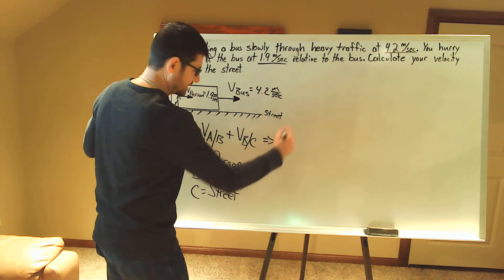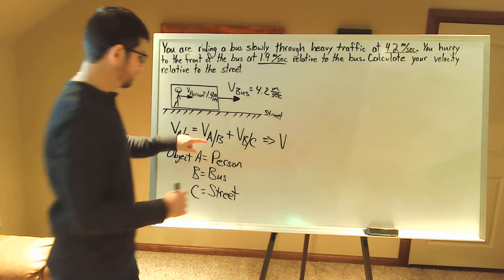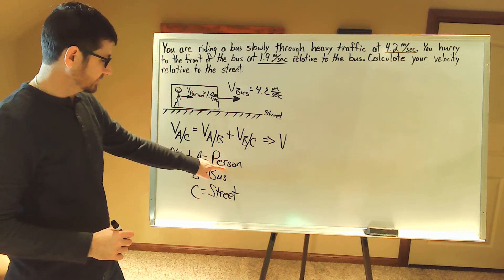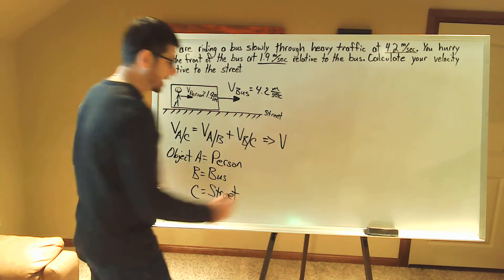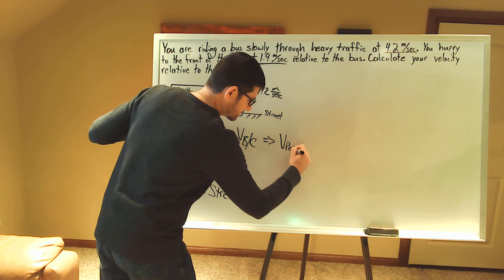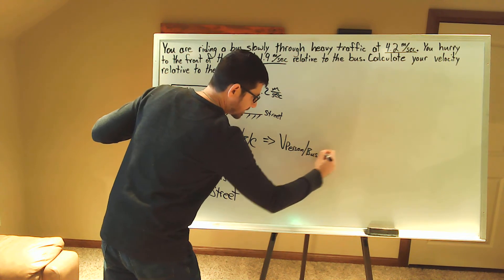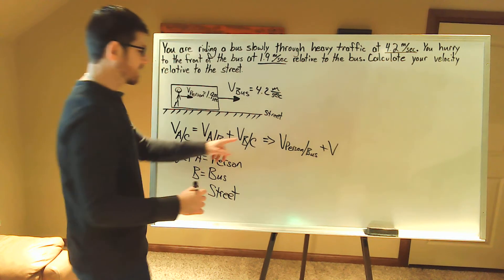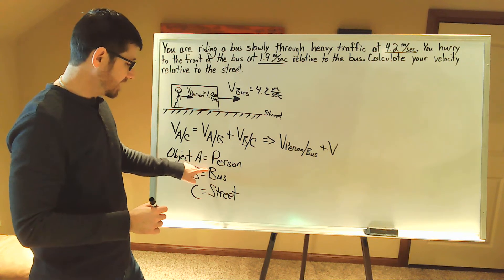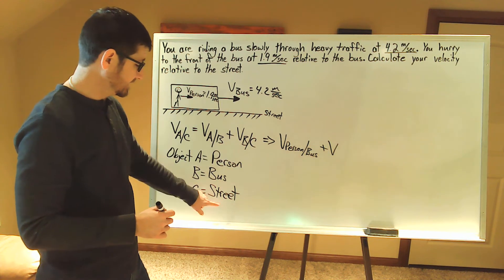So we're going to apply this to our equation. I'm going to rewrite this: the velocity of the person relative to the street equals the person relative to the bus plus the velocity of the bus relative to the street.